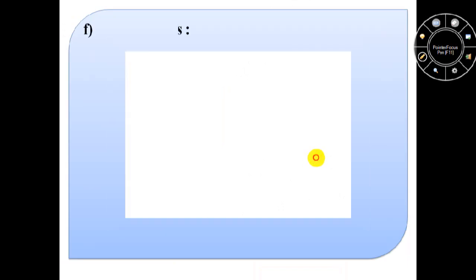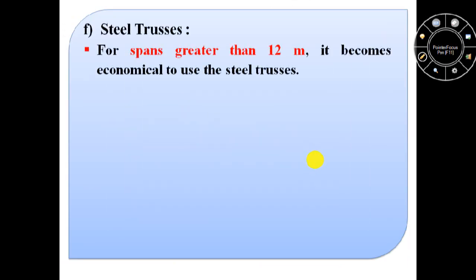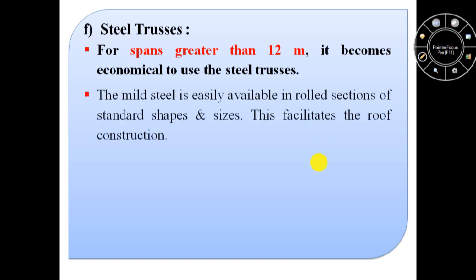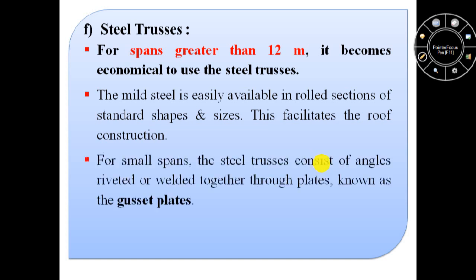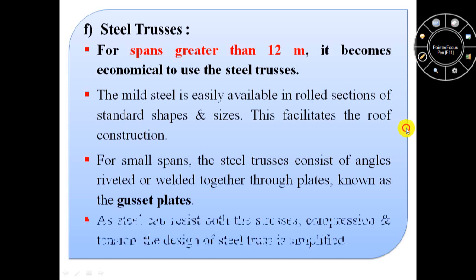For spans greater than 12 meters it becomes economical to use steel trusses. Mild steel is easily available in rolled sections of standard shapes and sizes, which facilitates roof construction. For small spans, steel trusses consist of angles riveted or welded together through gusset plates. As steel can resist both compression and tension stresses, the design of steel trusses is simplified.